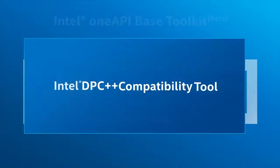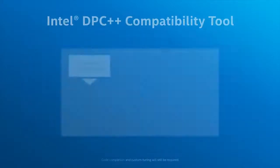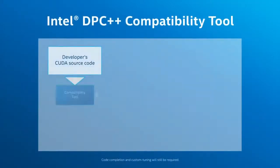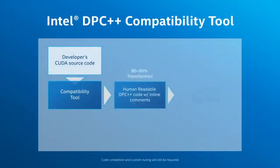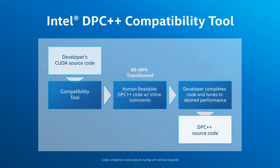The compatibility tool assists with a one-time CUDA code migration for kernels and API calls to create new DPC++ code. This automates much of the code porting process.